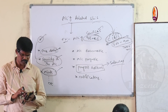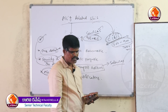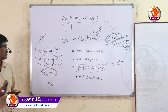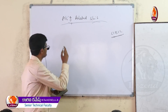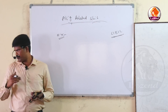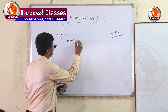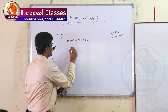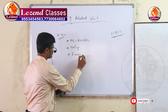Accounting software examples. The first one is MS Excel, next is Tally, and then FreshBooks.